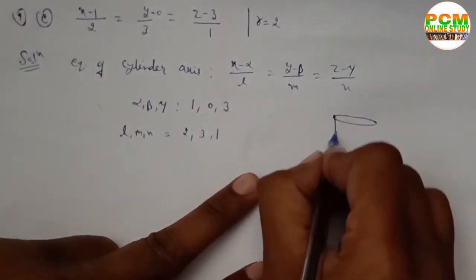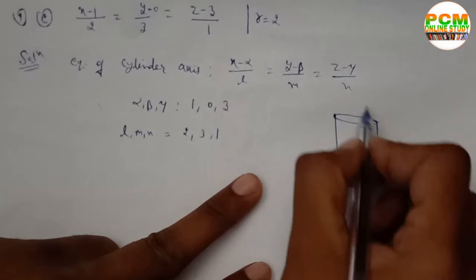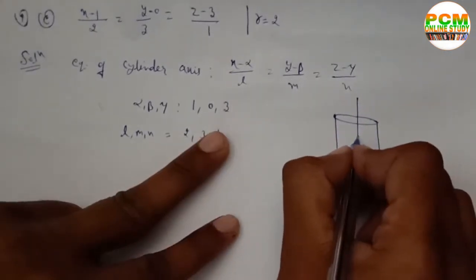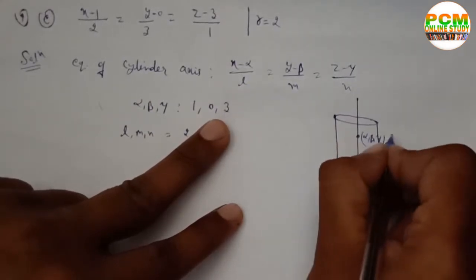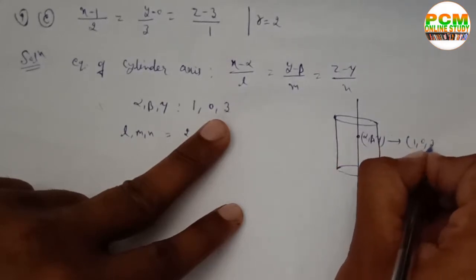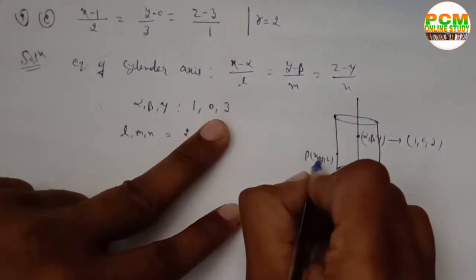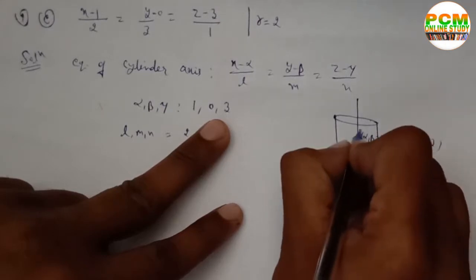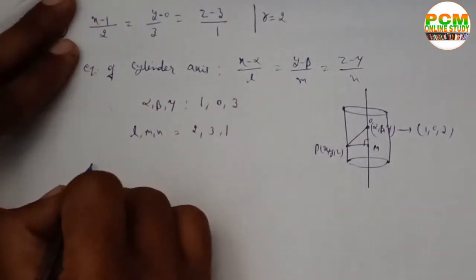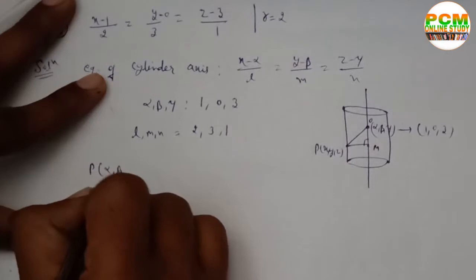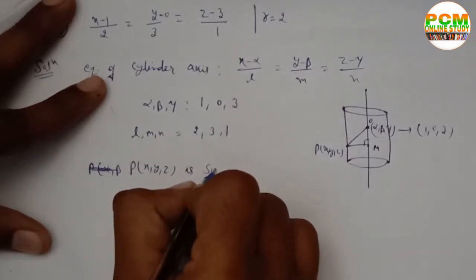Now, suppose it is a right circular cylinder, and the axis passes through point O(α, β, γ) = (1, 0, 3). Let P(x, y, z) be any point on the cylinder, and M be the foot of the perpendicular from P to the axis. Triangle OPM is a right-angled triangle.